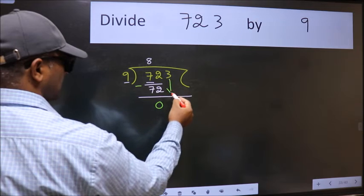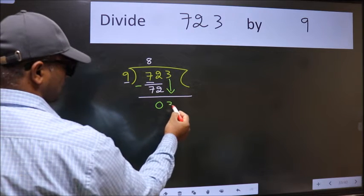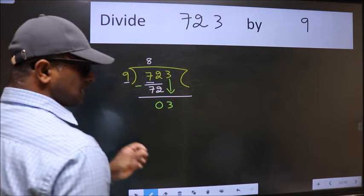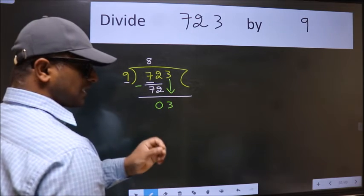After this, bring down the beside number, so 3 down. After this step, the mistake happens. And the mistake is this.